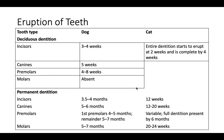Looking at deciduous dentition timelines: dog incisors erupt at three to four weeks. For cats, the entire baby dentition starts erupting at two weeks and is generally completed by four weeks of age. Dog canine teeth typically come in around five weeks. Dog premolars erupt between four to eight weeks. Baby molars are absent — dogs do not have molars as babies.